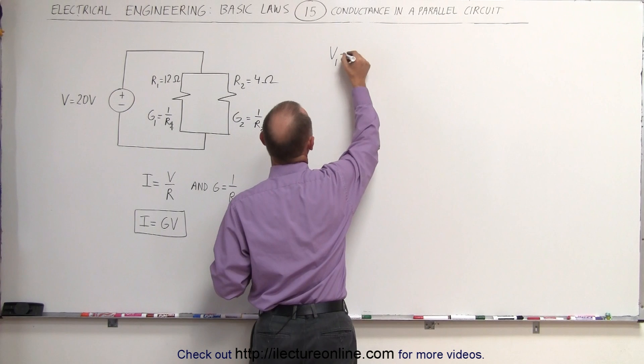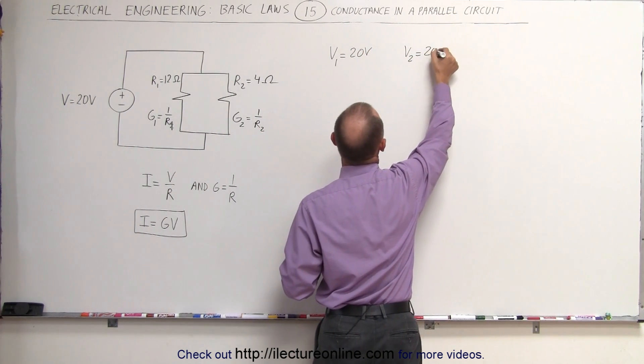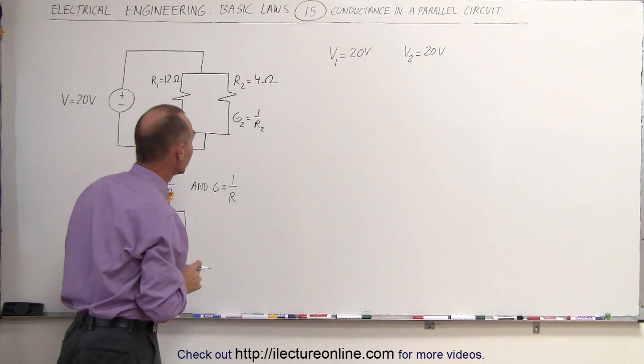We know the voltage in the first branch is equal to 20 volts. The voltage in the second branch is equal to 20 volts because the voltage across any branch in the parallel circuit is always equal to each other.